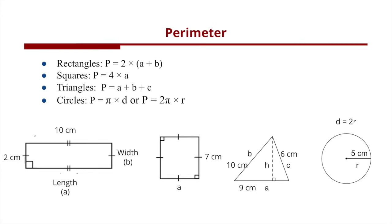The perimeter formula of a circle is pi multiplied by the diameter, or 2 pi multiplied by the radius, given that the diameter is 2 times the radius. Now that we have a better understanding of the perimeter of the basic geometric shapes, please pause the video and find the perimeter of the following shapes.